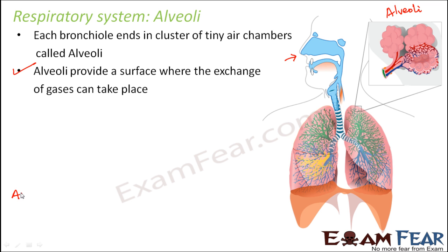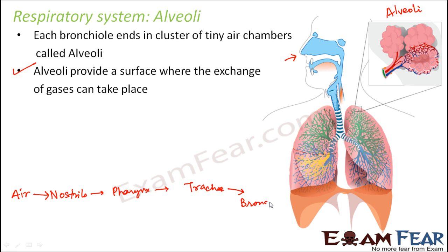When we breathe in air, it enters through the nostrils, into the nasal cavity, then the pharynx, then the trachea (the windpipe), then the bronchi, then the bronchioles, and finally reaches the alveoli — which are present at the terminal ends of the bronchioles. From the alveoli, oxygen enters the blood vessels.